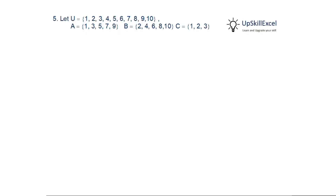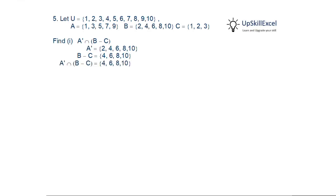Let U = {1 to 10}, A = {1,3,5,7,9}, B = {2,4,6,8,10}, and C = {1,2,3}. Note A and B are disjoint sets. First, find A complement intersection (B minus C). A complement equals {2,4,6,8,10}. B minus C: the common elements between B and C are just 2, so removing it leaves {4,6,8,10}. The intersection of these two sets gives {4,6,8,10}.